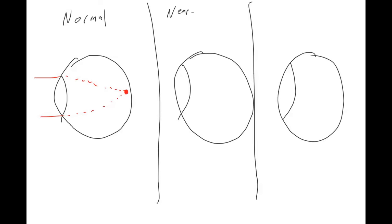In nearsighted or myopia, the light comes in and it gets focused too soon. And so the image that's projected on the back of your eye is out of focus. So this one is in focus, this one's out of focus.